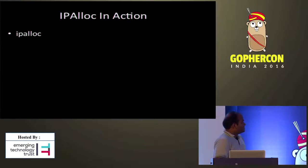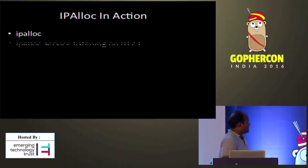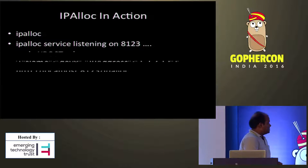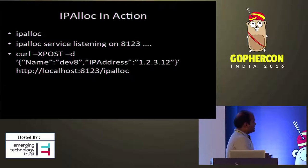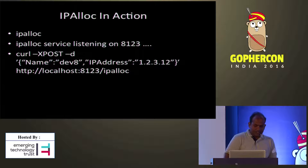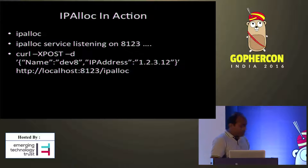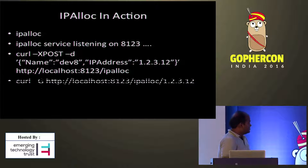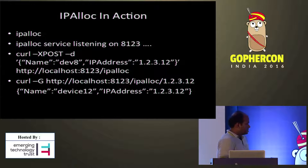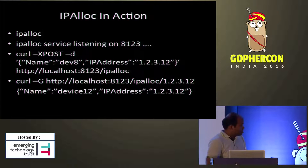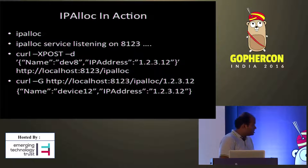Let's just see how it works. I'm using curl for testing. First, I start the web service — it starts listening on port 8123. Then I POST a request using curl -X POST -d with the data and the URL. When I do a GET request, it returns the JSON response. That was a simple web service I created, and it's available on GitHub if anybody is interested.